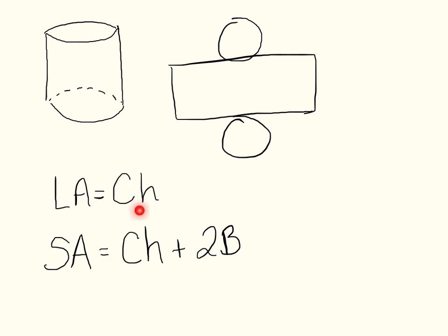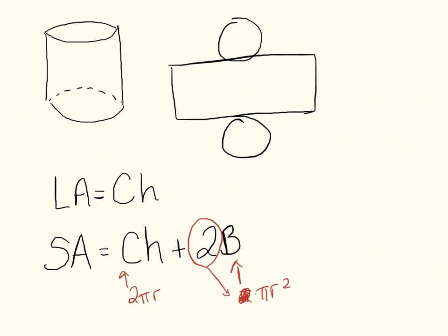The lateral area of a cylinder is circumference times height. The surface area is very similar to that of a prism: circumference times height plus two times the base. The circumference formula is 2πr, and the base is always a circle, so it's πr². That gives us surface area equals 2πrh plus 2πr².